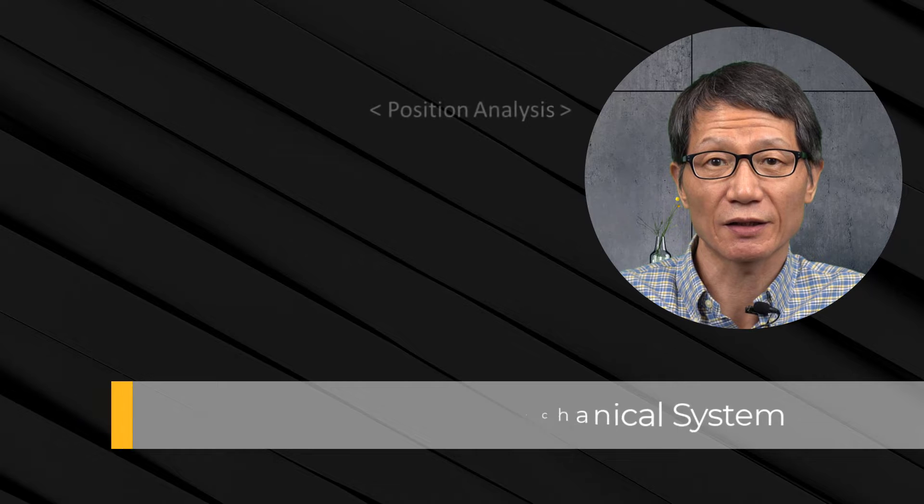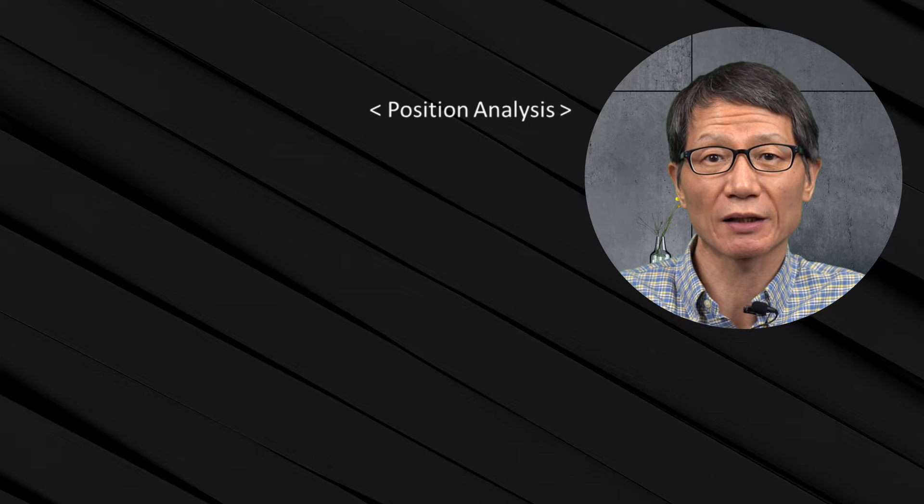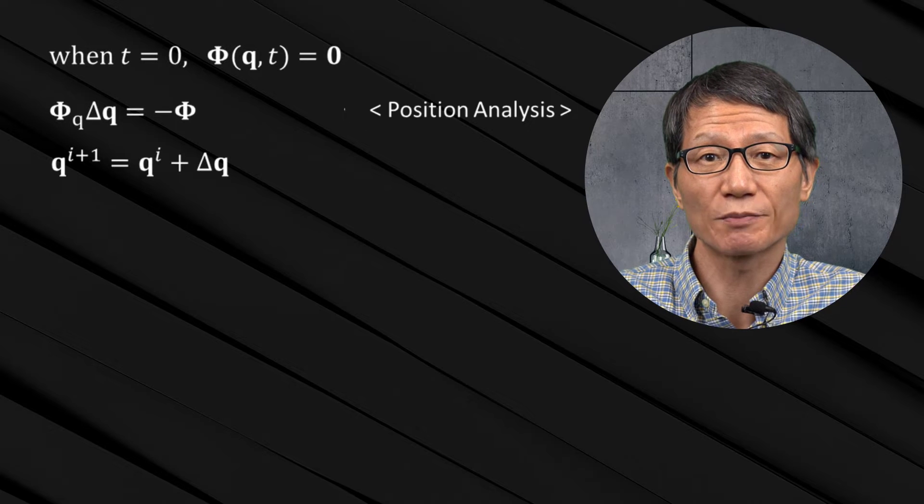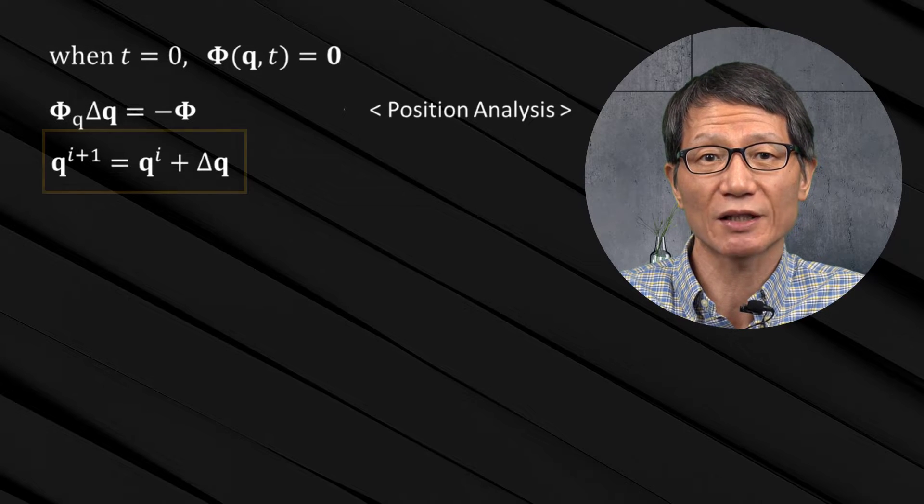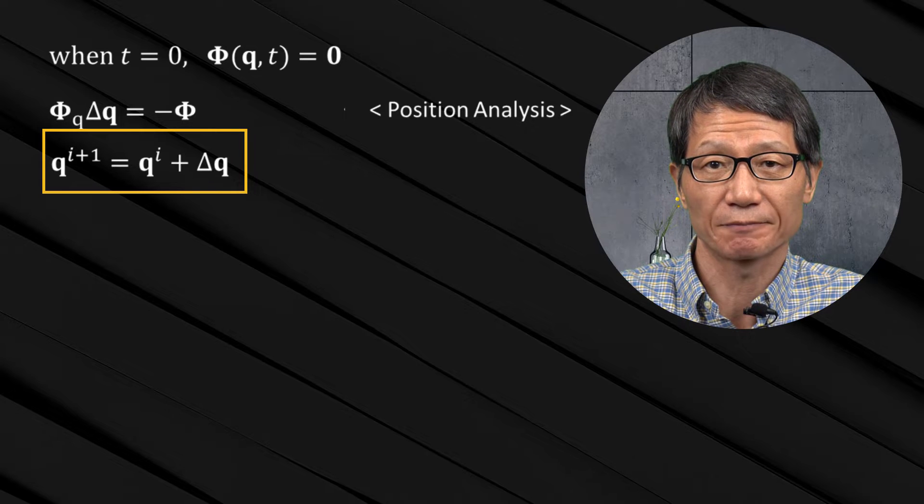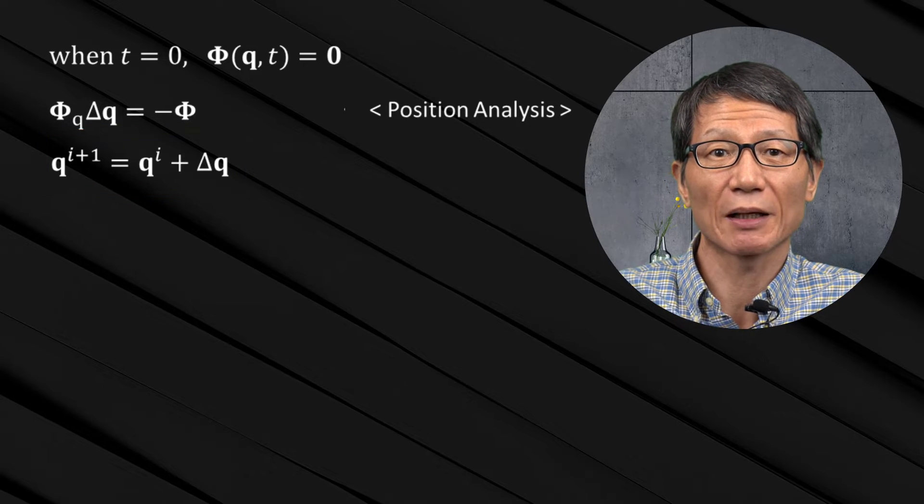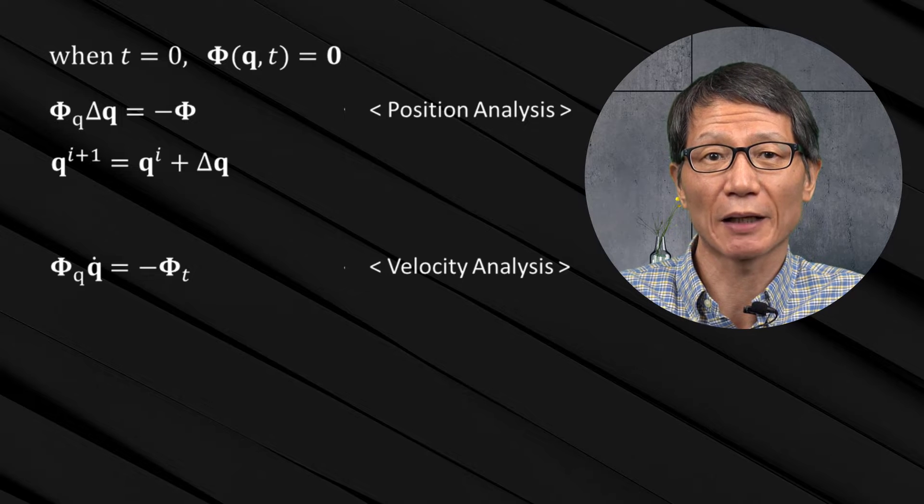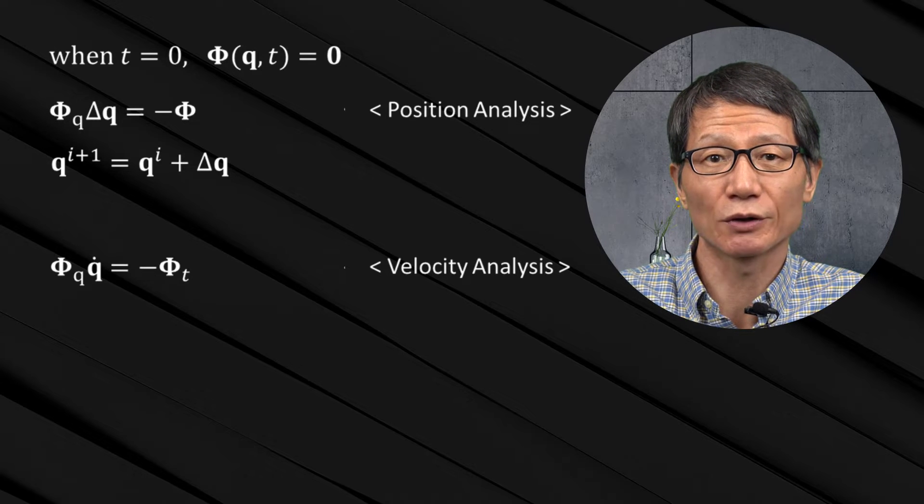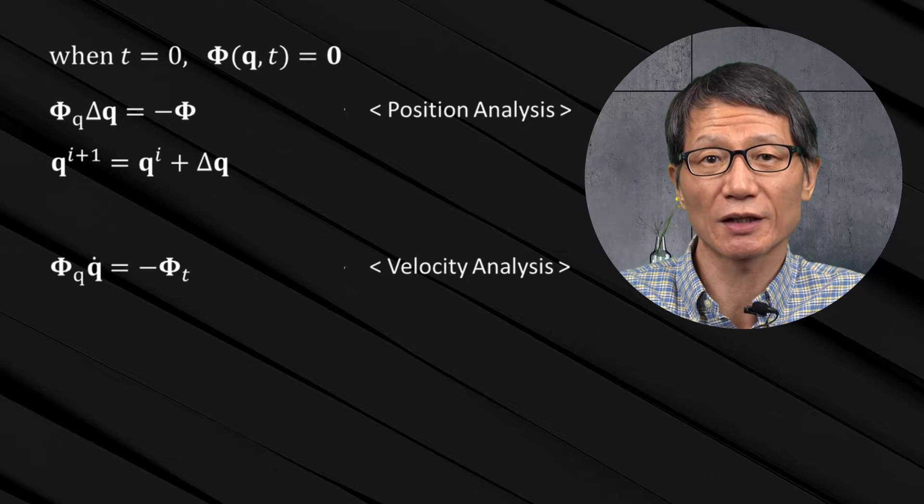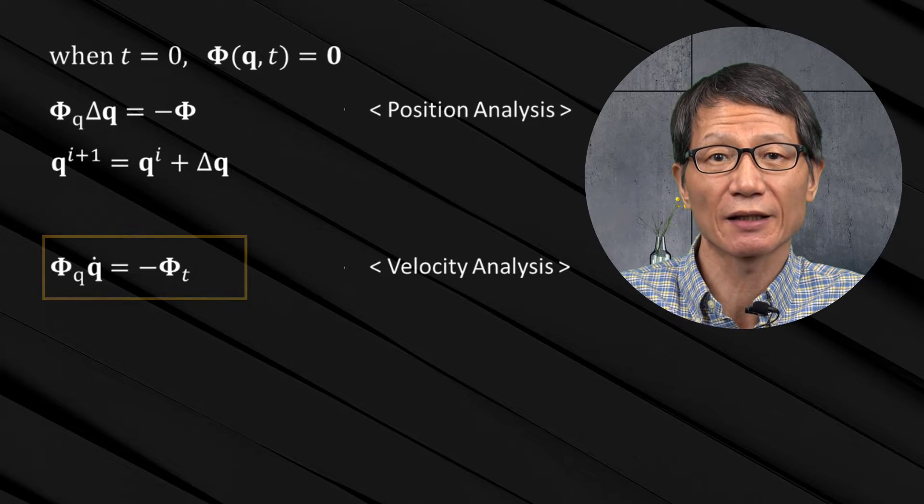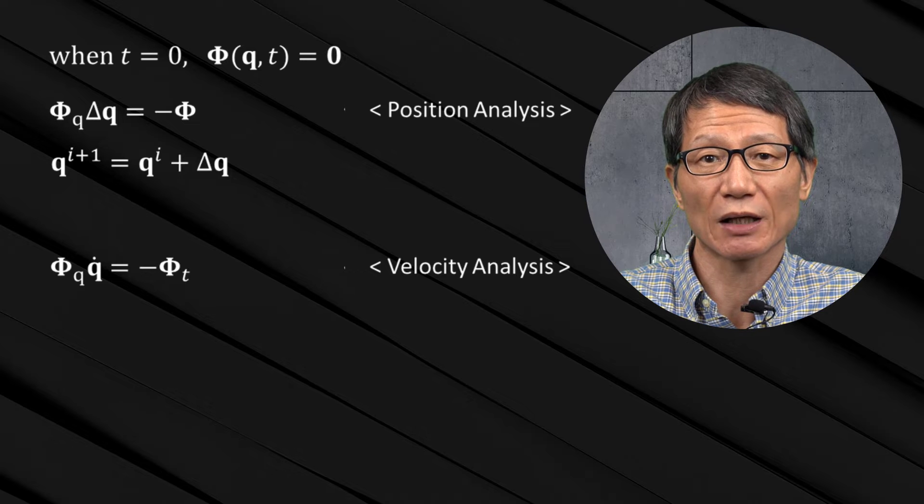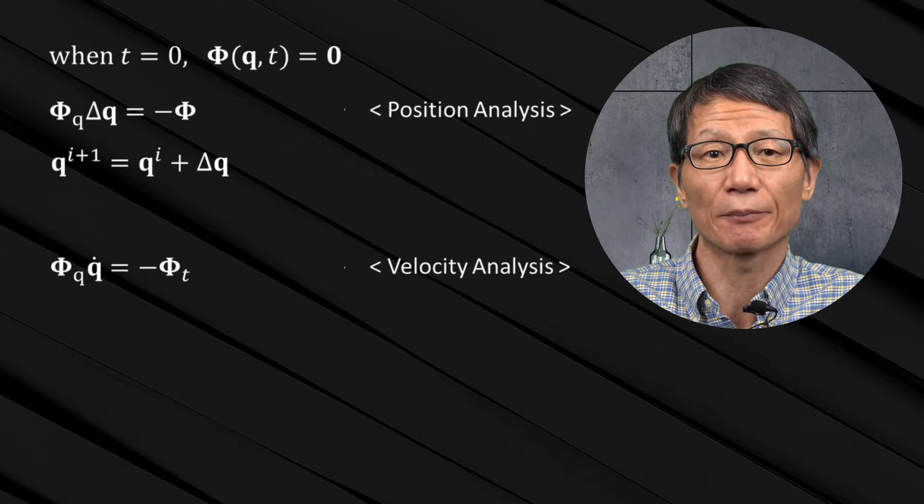The position analysis solves the position level constraints by using Newton's method, a numerical procedure for solving a system of linear equations. The velocity level constraints are then solved to get the velocities. It is important to know that the velocity level constraints are linear in terms of the velocities because the positions are already known from the earlier position analysis.